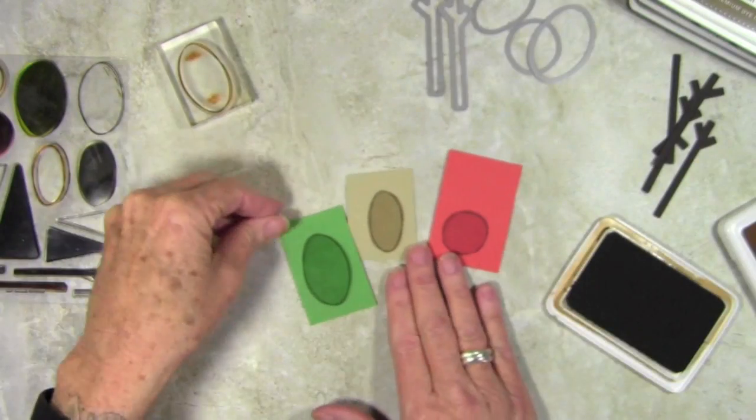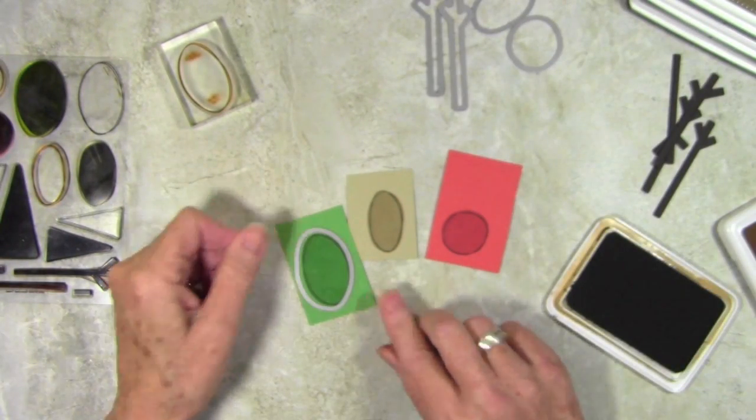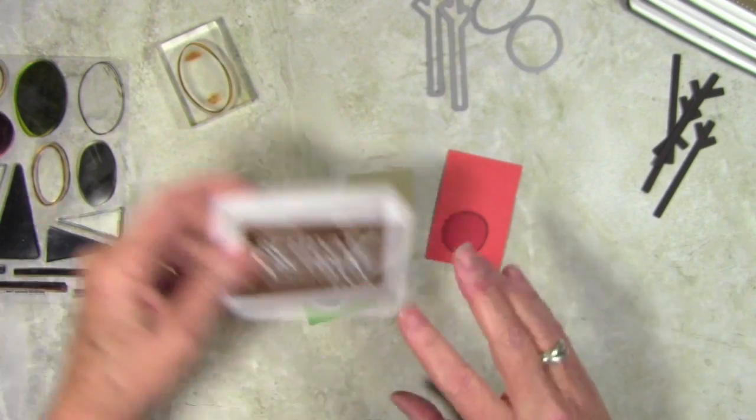Finally, once I'm done stamping, I'll go ahead and use the coordinating dies and I'll run these through my die cut machine and then I'll have my small shapes to put on my card.